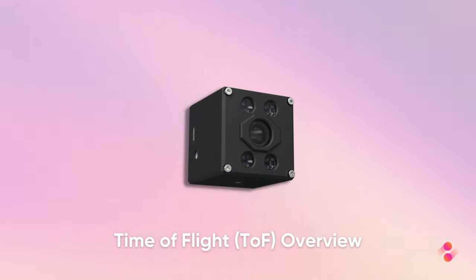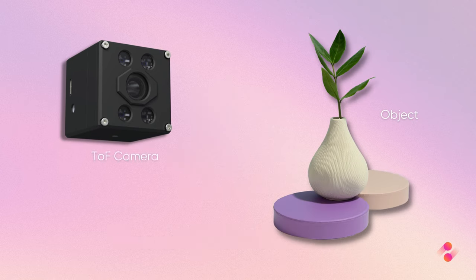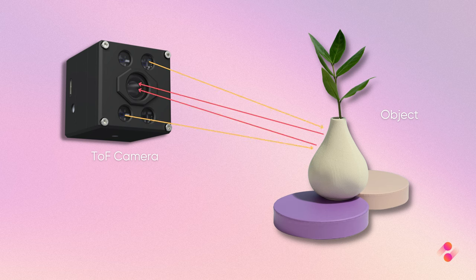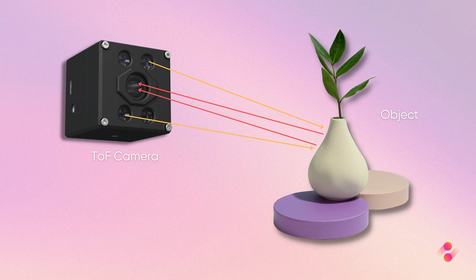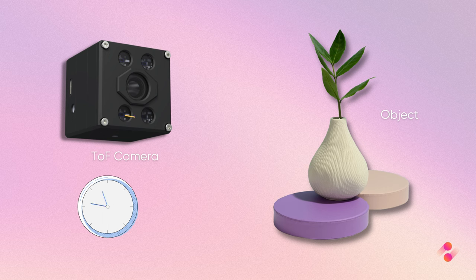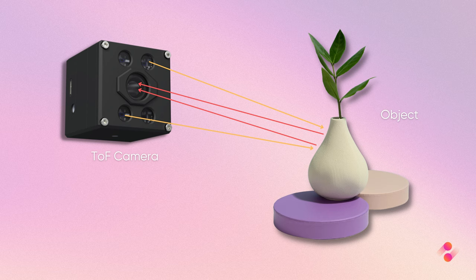So how do these cameras calculate depth? They use a technology called time-of-flight, or TOF. The TOF cameras calculate 3D depth data by emitting a light pulse toward an object and measuring the time it takes for the pulse to return. Most TOF cameras currently in use employ near-infrared light, although laser and visible light can also be used. The light pulse bounces off the object and travels back to the camera, where it is detected by the TOF sensor. By calculating the time difference between the emission of the pulse and the detection of the reflected pulse, the camera can determine the distance between itself and the object.